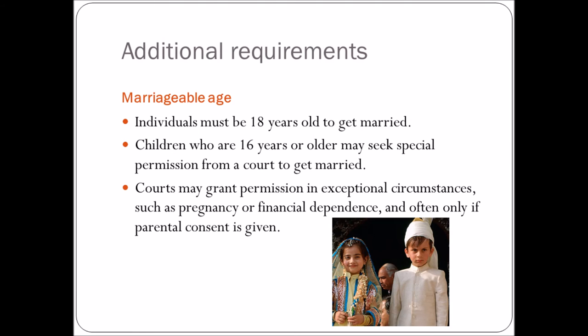First, you must be of marriageable age — you must be 18, both of you. If you're 16 or older, you can seek special permission from a court to get married. They usually only grant permission in exceptional circumstances, such as pregnancy or financial dependence, and often only if parental consent is given. For example, a 17-year-old brought to Australia to marry a 19-year-old, with no family or friends and financially dependent, may be allowed to marry.